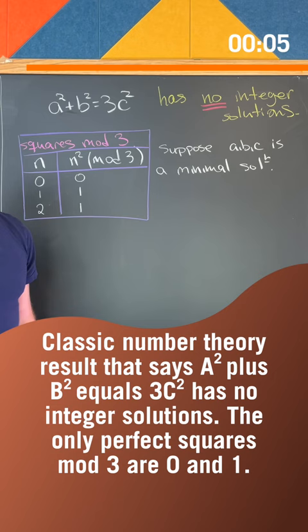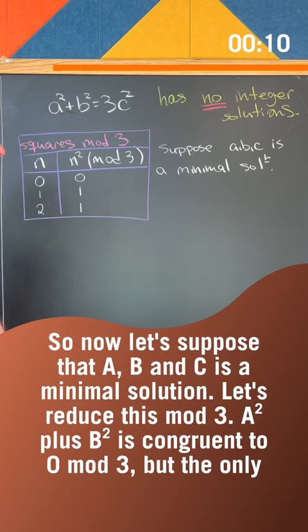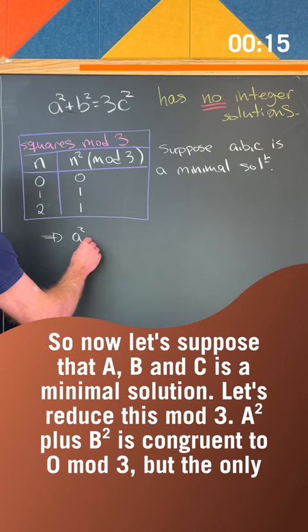So now let's suppose that a, b, and c is a minimal solution. Let's reduce this mod 3. A squared plus b squared is congruent to 0 mod 3.